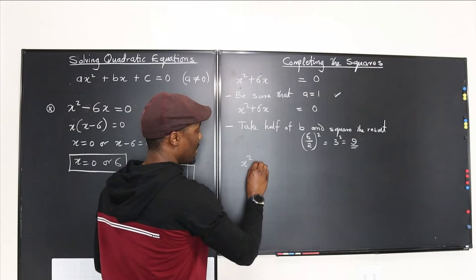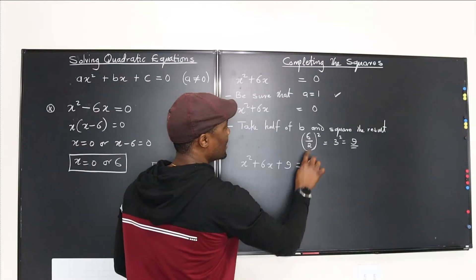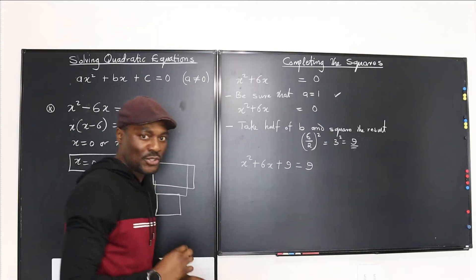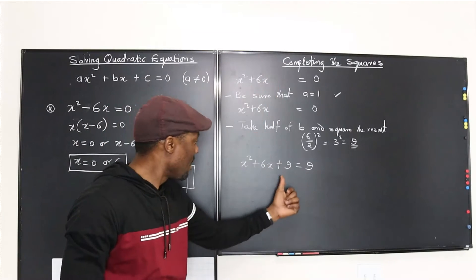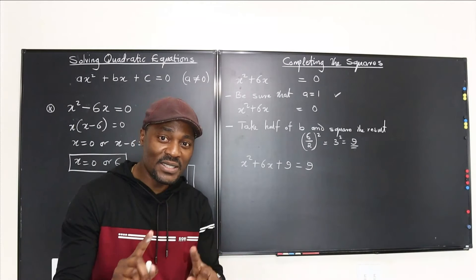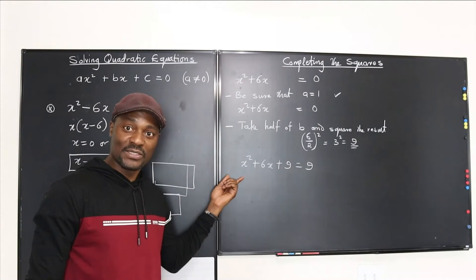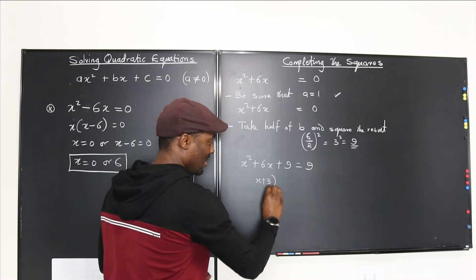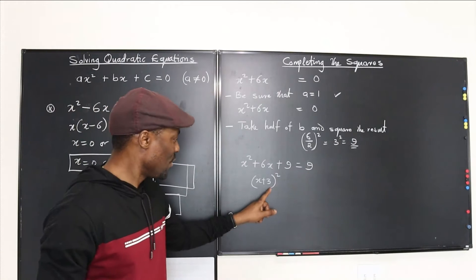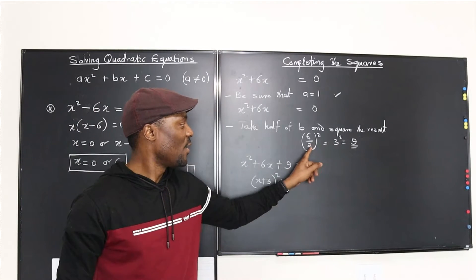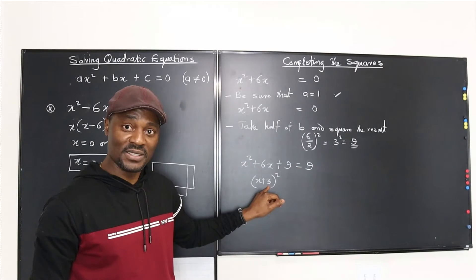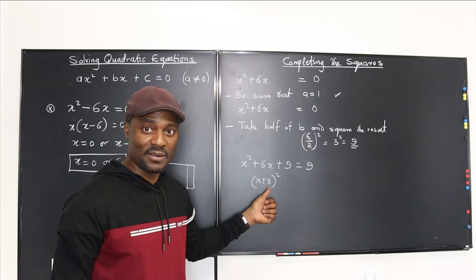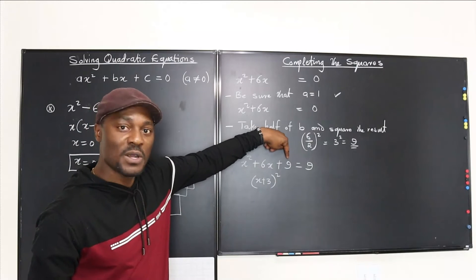Our new expression is x squared plus 6x plus 9 equals 9. You've added 9 to both sides, so nothing has changed — you can return to the original by subtracting 9 from both sides. The good news is you've created a perfect square on the left. This factors into x plus 3 squared. The 3 comes from dividing b by 2 — it's always the square root of the constant term.